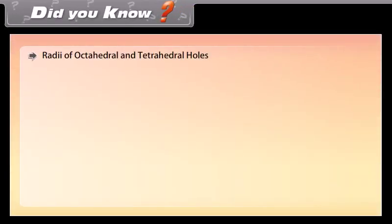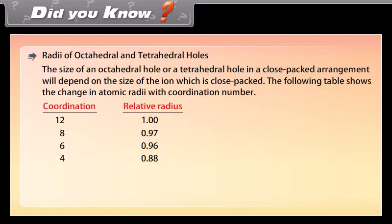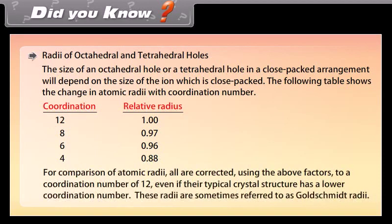The size of an octahedral hole or a tetrahedral hole in a close-packed arrangement depends on the size of the ion which is close-packed. The following table shows the change in atomic radii with coordination number. For comparison, all atomic radii are corrected to a coordination number of 12, even if their typical crystal structure has a lower coordination number. These radii are sometimes referred to as Goldschmidt radii.